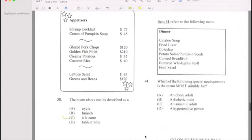Number 41: They gave us a menu. We have callaloo soup, fried liver, coleslaw, potato salad/pumpkin seed, curry, breadfruit, butter and whole grain roll, and fruit salad. Which of the following specific needs person is most likely suitable for?